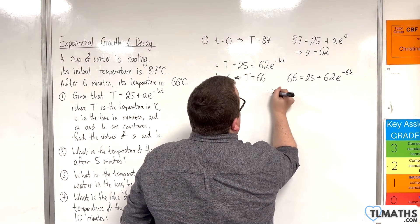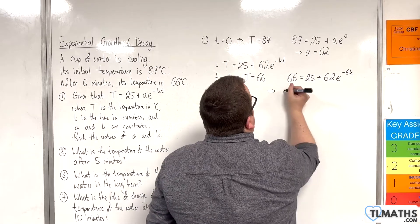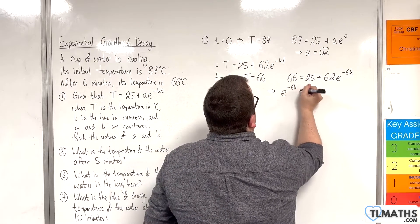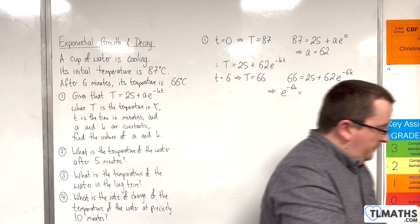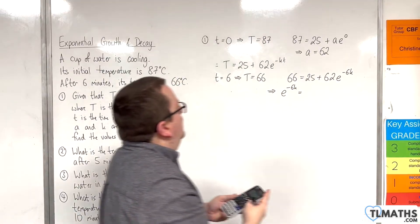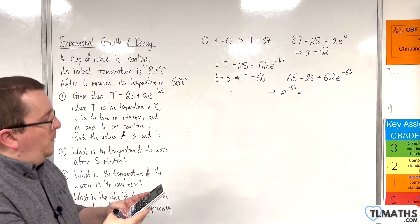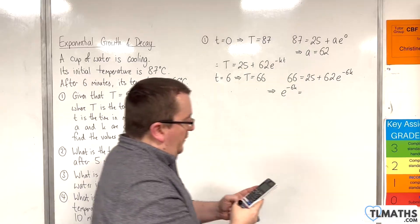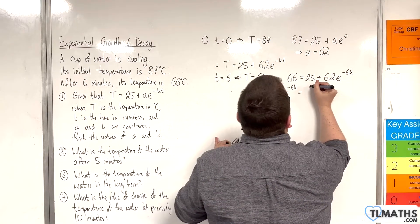OK, so we can rearrange this to get E to the minus 6K. So if we do 66, take away the 25, then divide through by 62, we'll get 41 over 62.